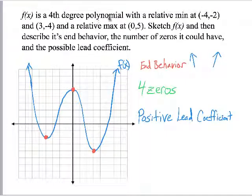If f(x) is a 4th degree polynomial with relative mins at negative 4, negative 2, which is right there, and 3, negative 4, which is right there, and relative max at 0, 5, so 0, 5 is right there, sketch f(x) and then describe its end behavior, name the zeros it could have, and the possible lead coefficient. So, if this is a max, we know it's going to go like this. If this is a min, we know it's going to go like a valley. And another min over here, you know it's going to be a valley.